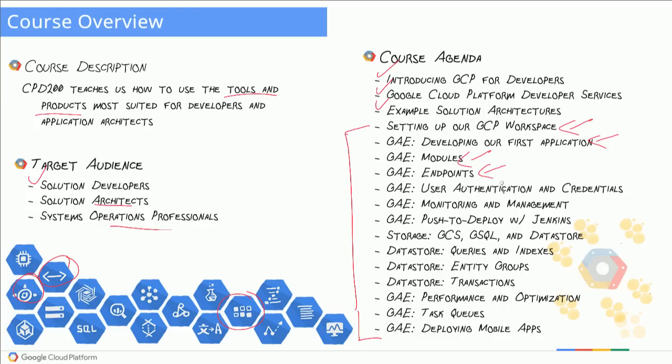From there we'll learn about endpoints — really easy ways for GAE to produce API endpoints available on the web, which can be secured and consumed from mobile, desktop, laptop, and other applications. We'll cover user authentication and credentials on Google App Engine, then look at monitoring and management tools like Cloud Debugger and Cloud Logging. We'll also work on push-to-deploy with Jenkins to set up continuous integration on App Engine.